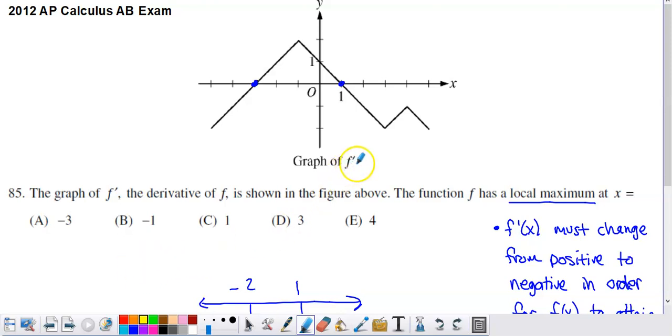What they present us with is a graph of f prime. So the graph of f prime, the derivative of f, is shown in the figure above. The function f has a local maximum at x equals which of the following values.